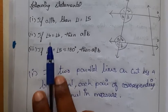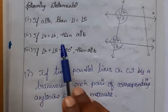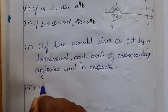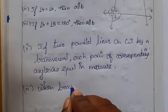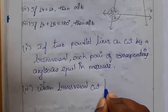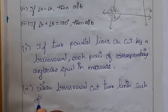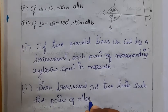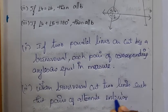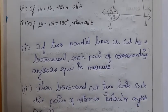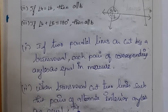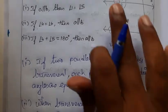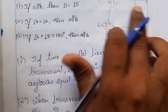Second: if angle 4 equals angle 6, then A is parallel to B. This satisfies the alternate interior angle condition. When a transversal cuts two lines such that pairs of alternate interior angles are equal, the lines have to be parallel.